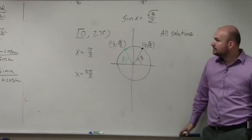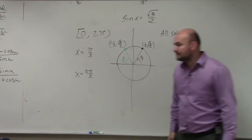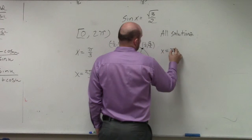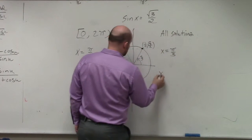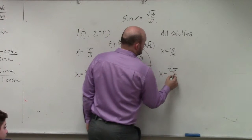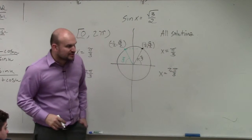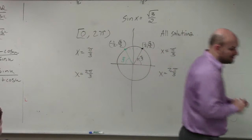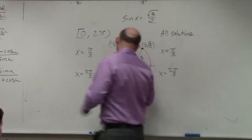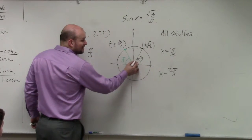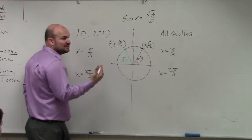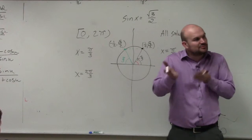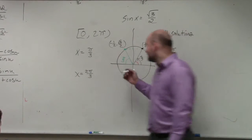Now the next one is finding all the solutions. When finding all the solutions, it's a little bit different because we have our two solutions, but now we want to find all of them — not just between 0 and 2π, but all the coterminal angles. To find coterminal angles, you add or subtract 2π.